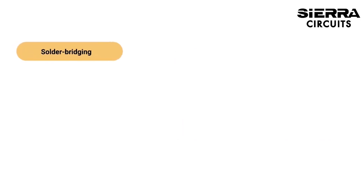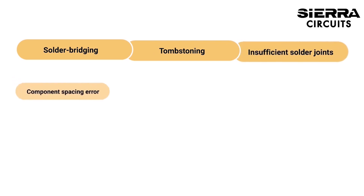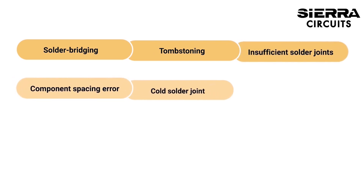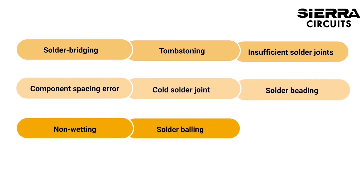Errors that can occur during the SMT process include solder bridging, tombstoning, insufficient solder joints, component spacing error, cold solder joint, solder beading, non-wetting, solder balling, and component shorting.